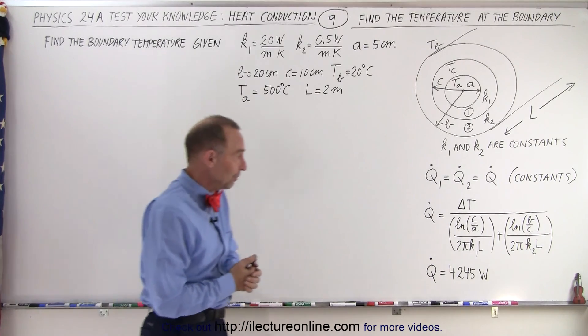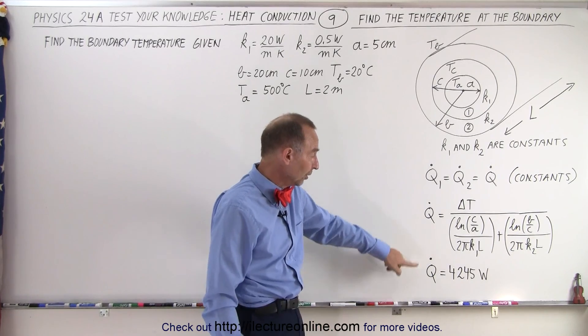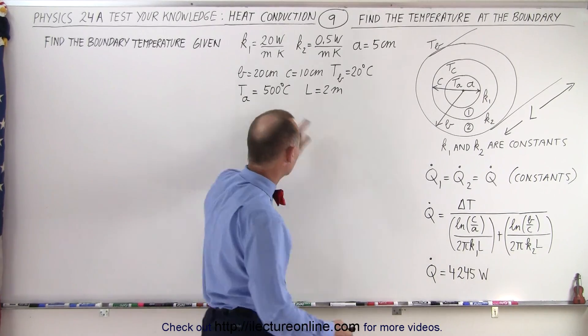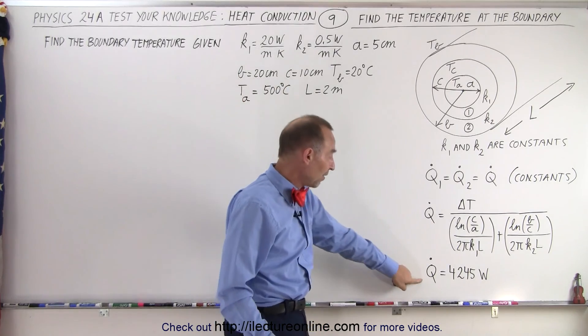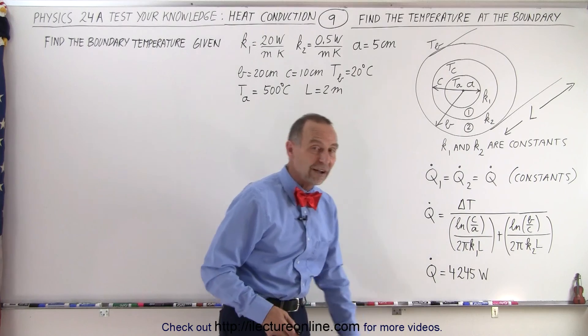Again in the previous videos we found the general equation for a multi-layer, in this case a two-layered cylinder, and in the example with the specific information that we got we found in the previous video that the heat flow is 4245 watts.